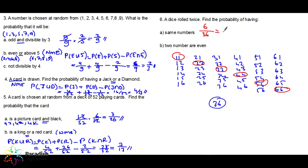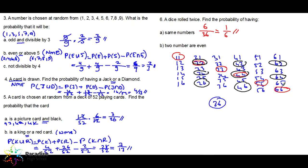So the probability of same numbers is six over 36, which simplifies to one over six. For two even numbers: one is odd so skip it; two-two, two-four, two-six; three is odd; four-two, four-four, four-six; five is odd; six-two, six-four, six-six. That gives nine possible outcomes, so the probability is nine over 36, which simplifies to one over four.